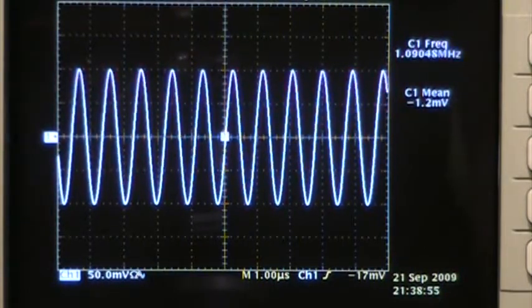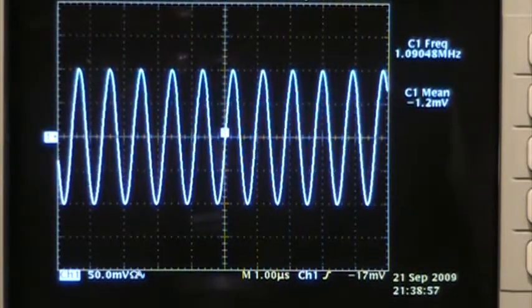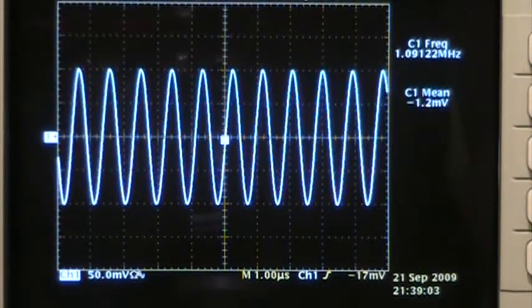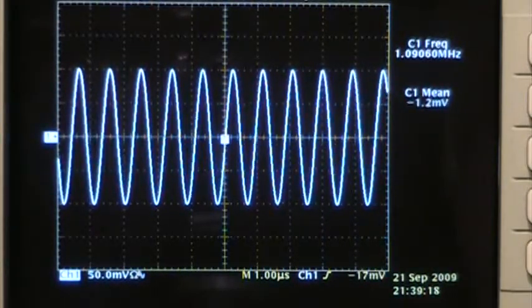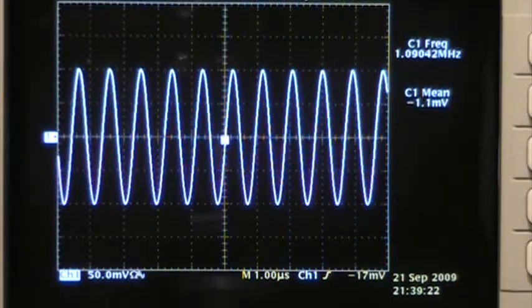This time I want to show you an example of where the digital meter actually outperforms the oscilloscope. Now currently I am inputting a 1 megahertz signal into the oscilloscope at about 100 millivolts peak. As you can see there, a little over 1 megahertz, and the oscilloscope is reading a net mean approximately minus 1.2 millivolts.